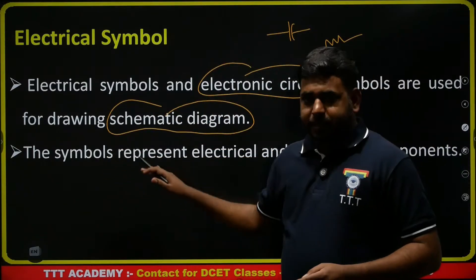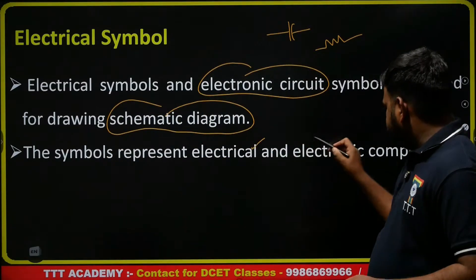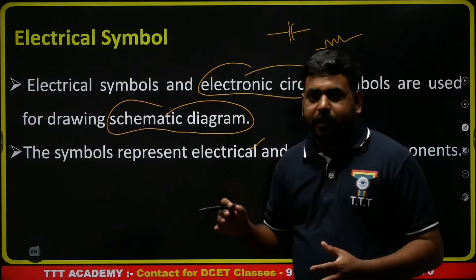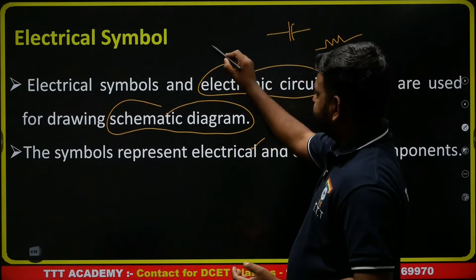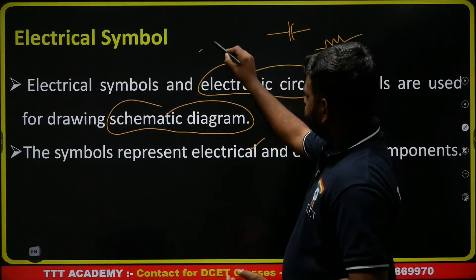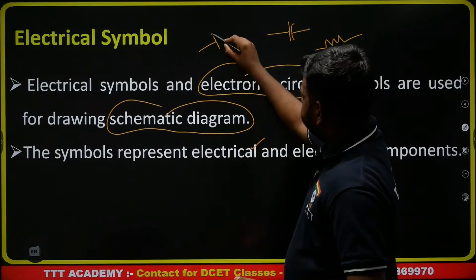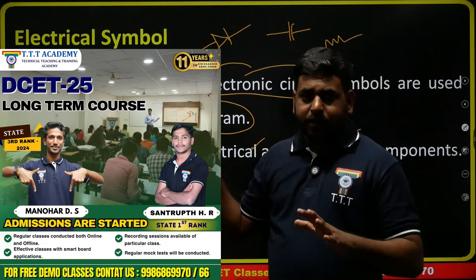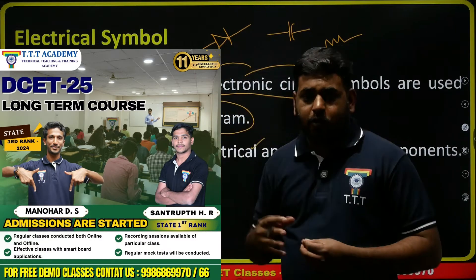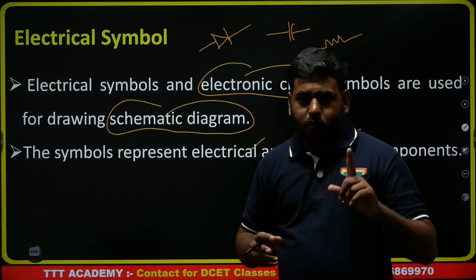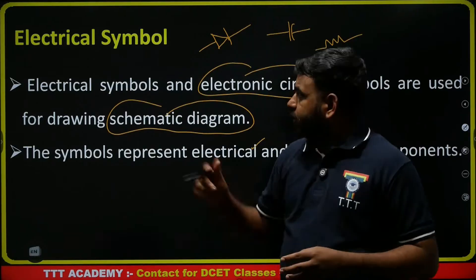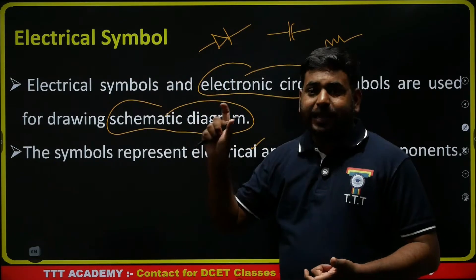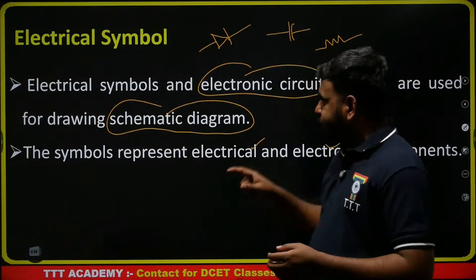The symbol represents electrical and electronic components. For example, this is a symbol — this is one diode. A diode is a device that allows the flow of current in only one direction. So, in a circuit, a diode is connected to indicate which direction current flows.